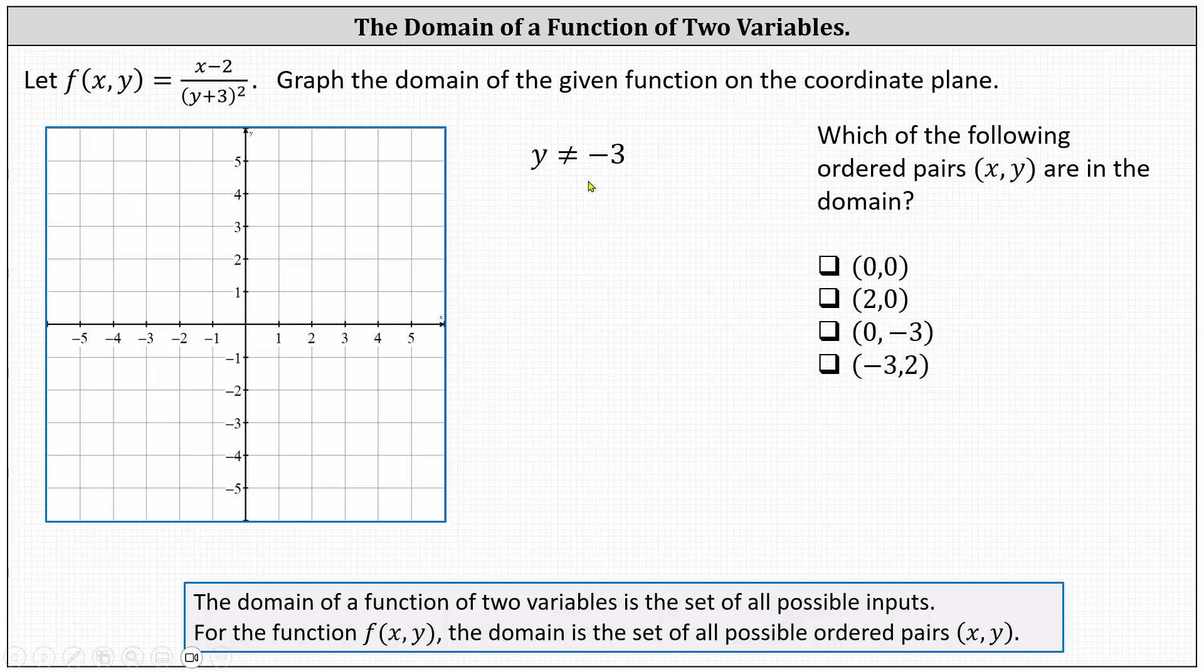we graph the line y equals negative three as a dashed line. This indicates the points on this line are not in the domain.